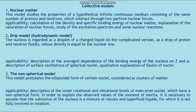Third: the non-spherical model. This model postulates the ellipsoidal form of certain nuclei considered as clusters of nuclear matter. It takes into account vibrational degrees of freedom as in the droplet model, as well as rotational degrees of freedom that are absent in spherical nuclei. Applications include description of the lower rotational and vibrational levels of even-even nuclei with non-spherical form. To explain the observed values of the moment of inertia, the nuclear substance is assumed to be a mixture of viscous and superfluid liquids not fully involved in rotation.